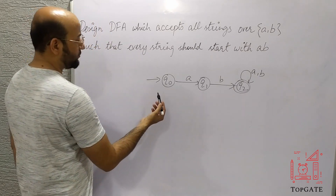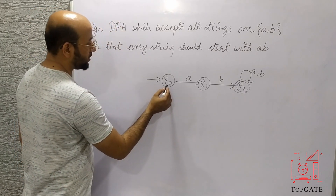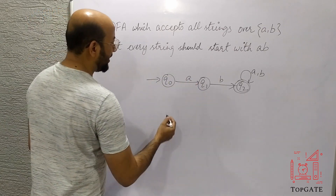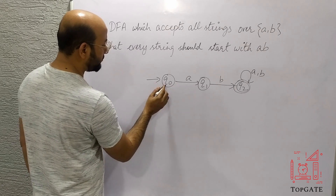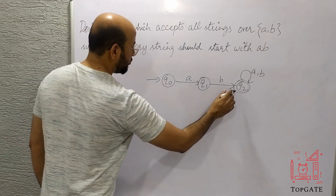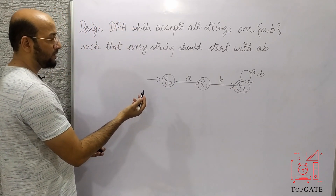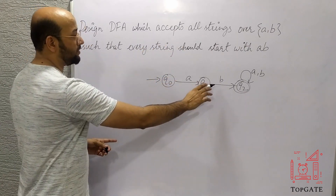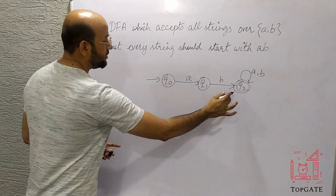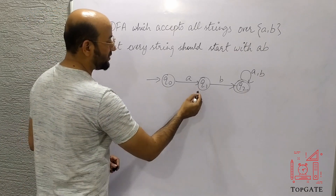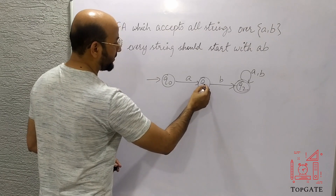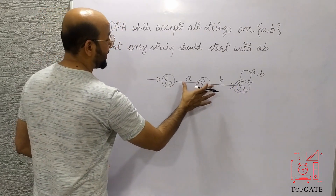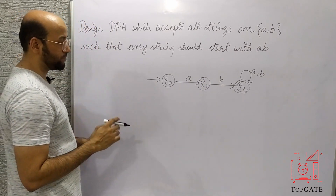To complete the DFA I need a transition for 'b' at q0 and a transition for 'a' at q1. If I take the path for 'b' at q0 and go to q2, it would violate the language — I cannot start a string with 'b'. Similarly, if I take 'a' at q1 and go to q2, the 'ab' prefix would also be violated.